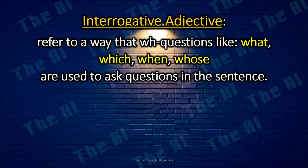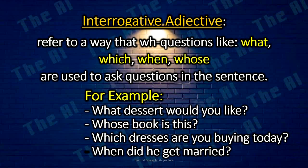Interrogative adjectives refer to wh-questions like what, which, when, and whose, which are used to ask questions in a sentence. For example: What dessert would you like? Whose book is this? Which dresses are you buying today? When did he get married?